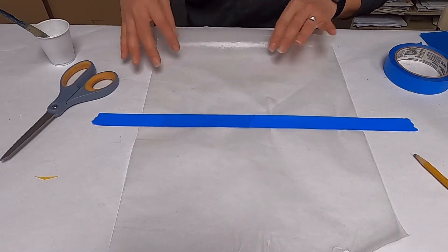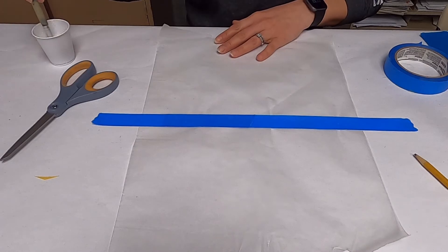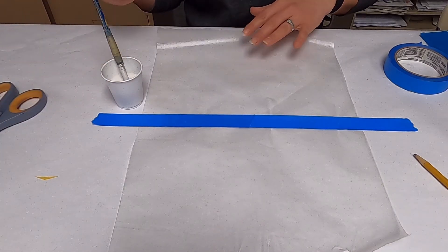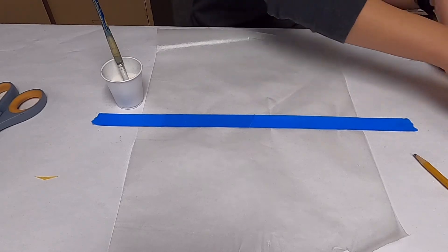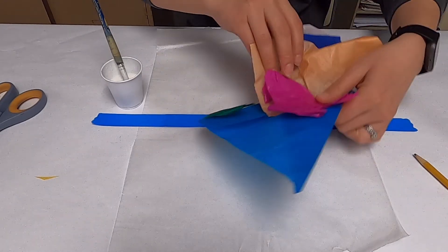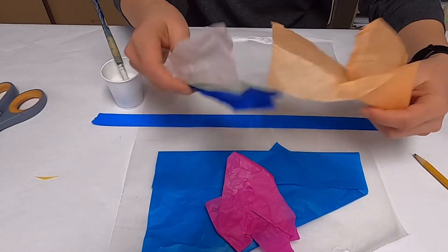With wax paper, there's a bit more involvement, but kids have fun painting with the glue. You'll need some colored tissue paper. I've got various colors here.